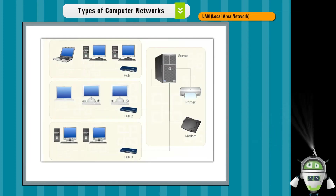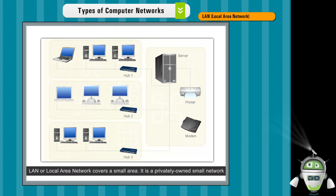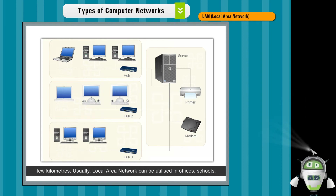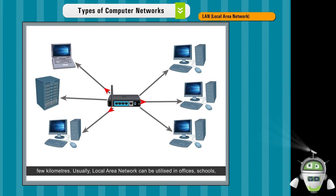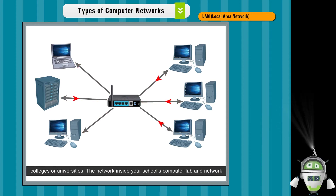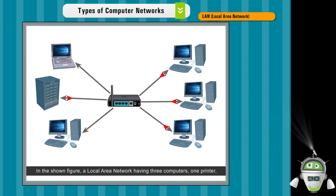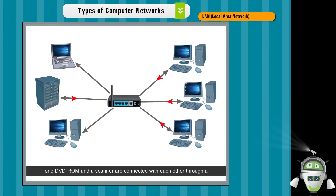LAN – Local Area Network. LAN or Local Area Network covers a small area. It is a privately owned small network that spans across a small campus, a building, or from one room to a campus of few kilometers. Usually, local area network can be utilized in offices, schools, colleges, or universities. The network inside your school's computer lab and network inside your home are a few examples of LAN. In the shown figure, a local area network having three computers, one printer, one DVD drive, and a scanner are connected with each other through a local area network.